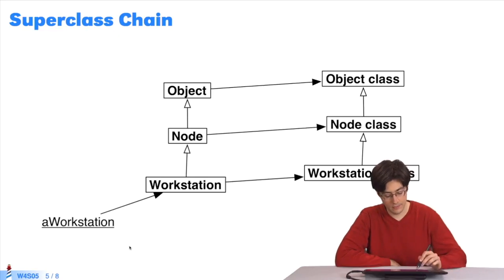If I message the object a workstation, the lookup algorithm searches the a workstation class. Then it goes up through superclasses until it finds a matching method.